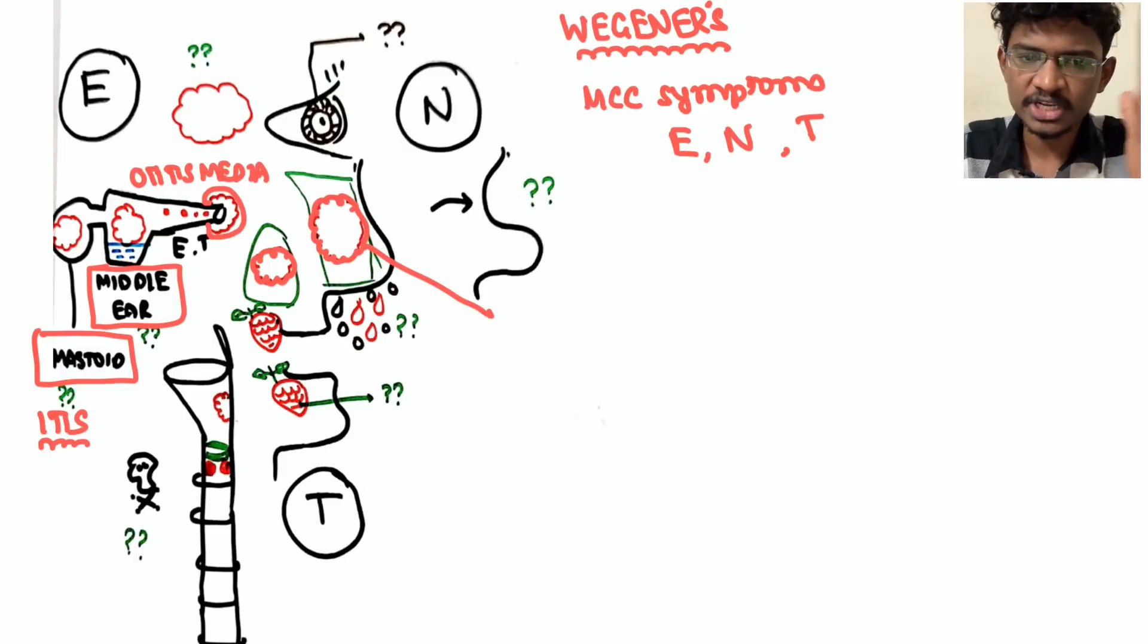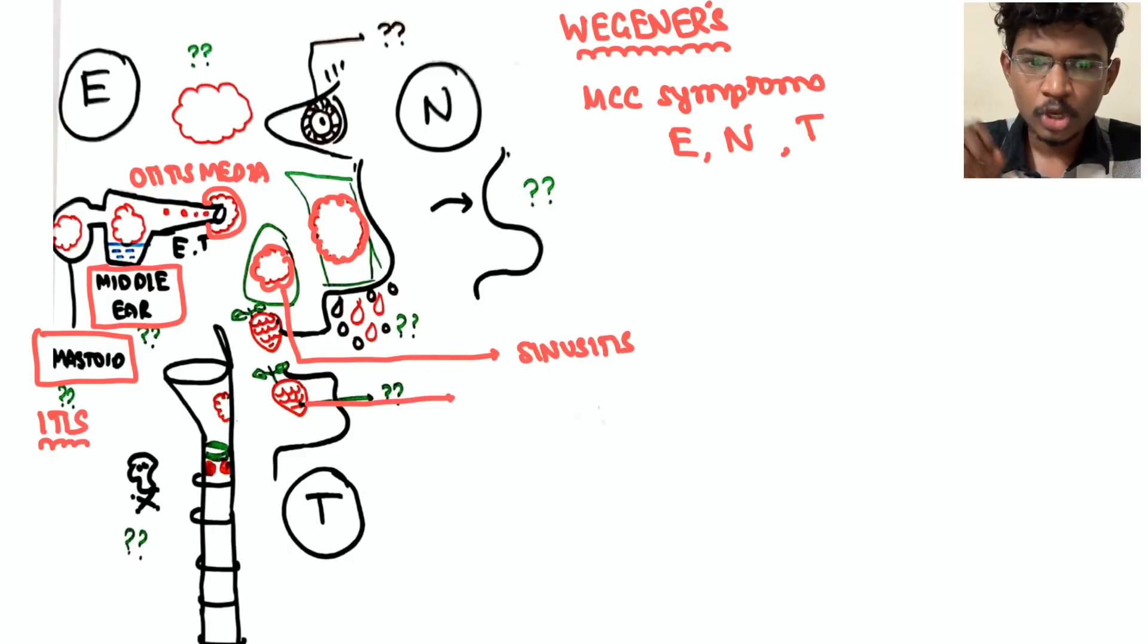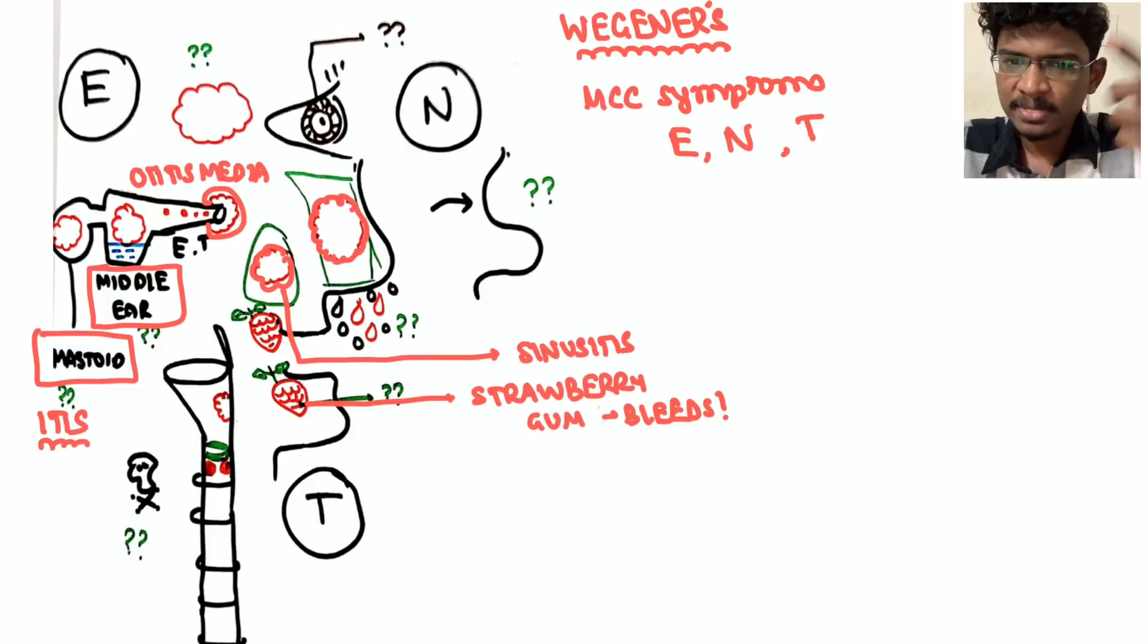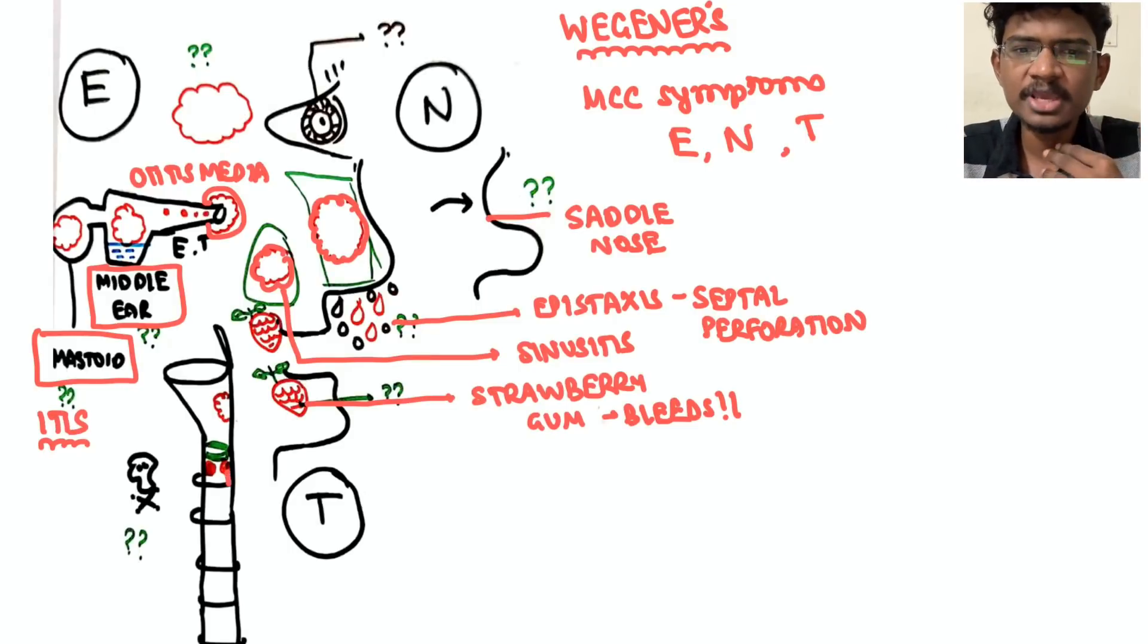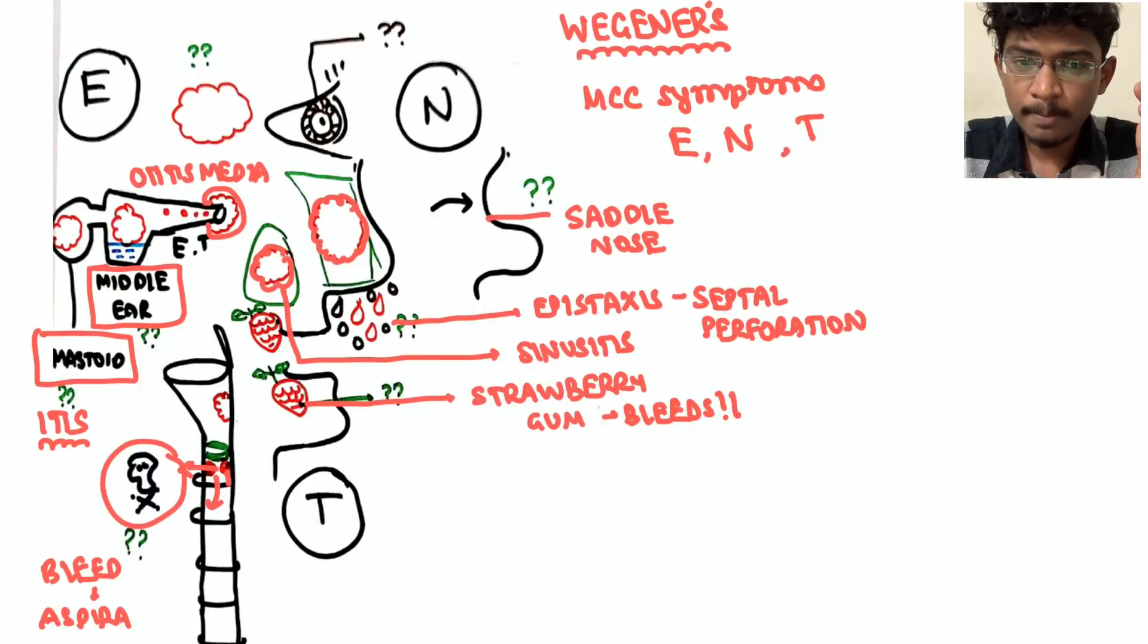The Wegener's is in short for you - how to remember? Most common symptom is ENT symptoms. Ear - E for ear - mastoiditis or granulomas will form in the middle ear leading to serous otitis media, or it can also obstruct the eustachian tube resulting in middle ear infections. Next, N - sinusitis, granulomas in the sinuses and granulomas in septum causing septal perforation and epistaxis and followed by saddle nose deformity. N is over. Next T - gum - strawberry gums, mucosal bleeds might happen in the gums.